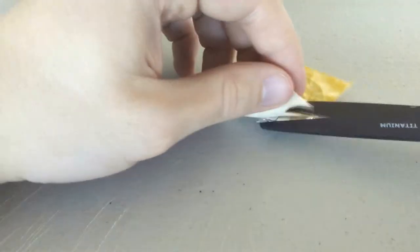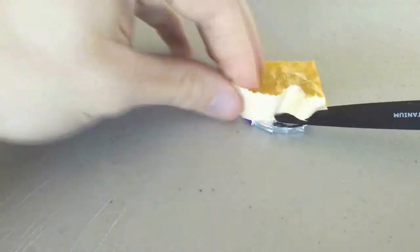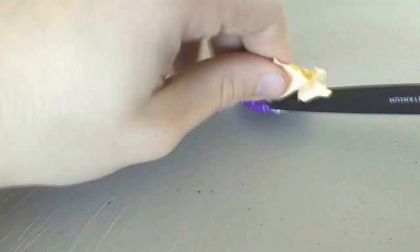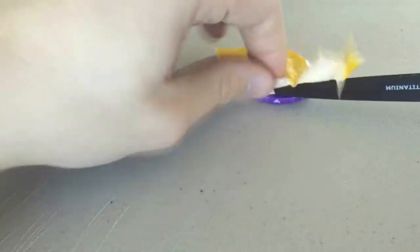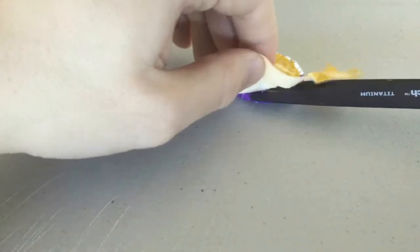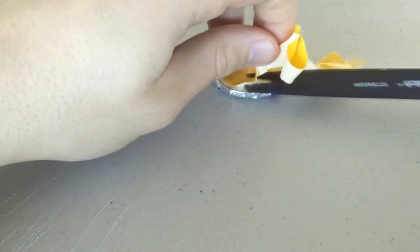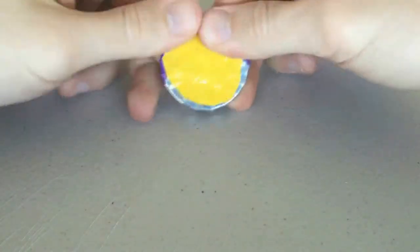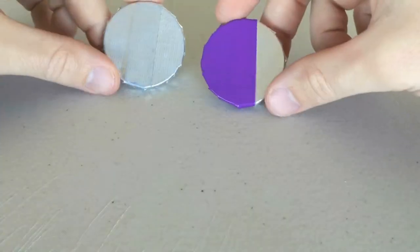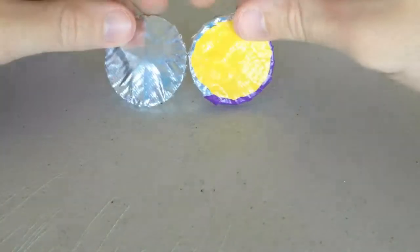And then again, one last piece to kind of seal it up. Just cover all the seams and resist peeling that much more. And again, the only difference between these two coins is the one on the left is done entirely with silver tape.